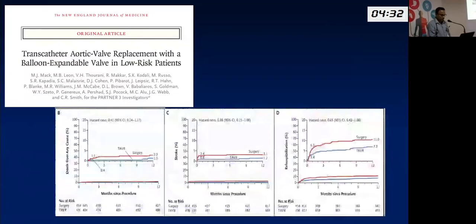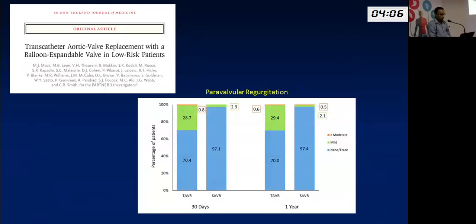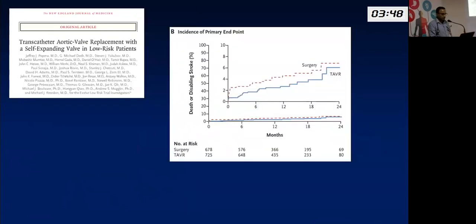The individual components of the composite primary endpoint — death, stroke, and rehospitalization due to heart failure — all showed TAVI performing better than surgical valves. For secondary outcomes, major bleeding complications and acute kidney injury were again lower with TAVI valves, whereas new pacemaker implantation rates and new-onset LBBB were slightly higher with TAVI. TAVI valves show a small amount of paravalvular regurgitation, but this tends to be mild with no clinical impact. Valve areas and gradients remained good at one year, with similar results for the self-expanding valve platform.